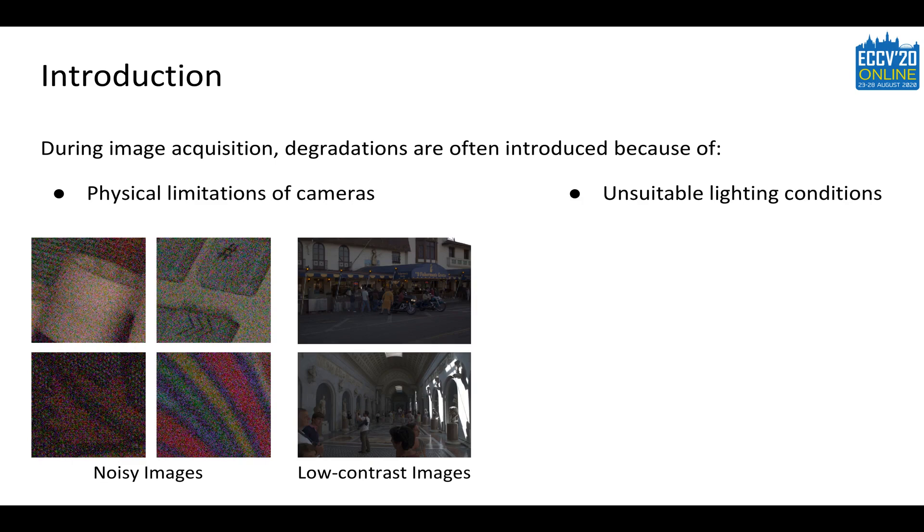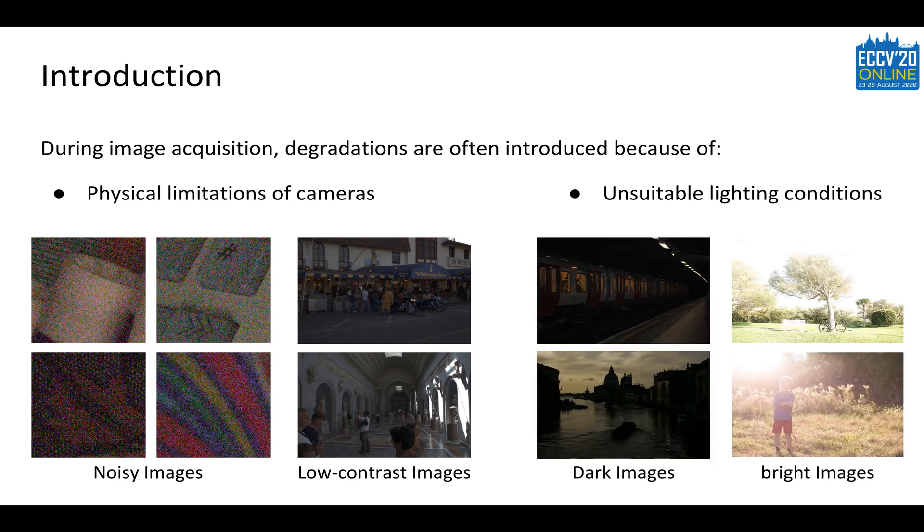For instance, smartphone cameras have narrow aperture and small image sensor. As a consequence, they frequently generate noisy and low contrast images. Similarly, images captured under unsuitable lighting conditions are either too dark or too bright.